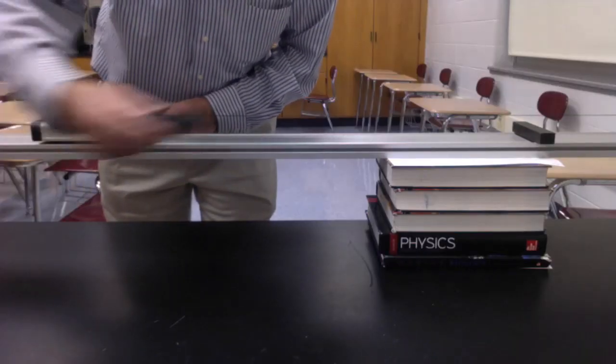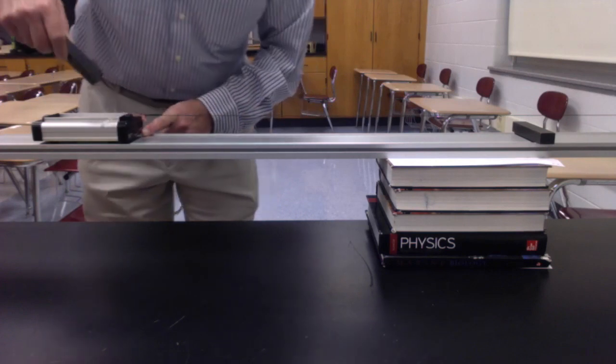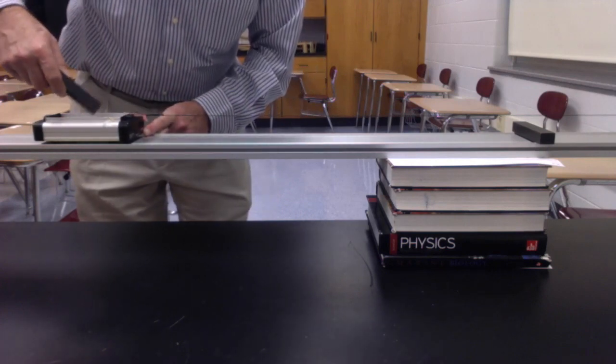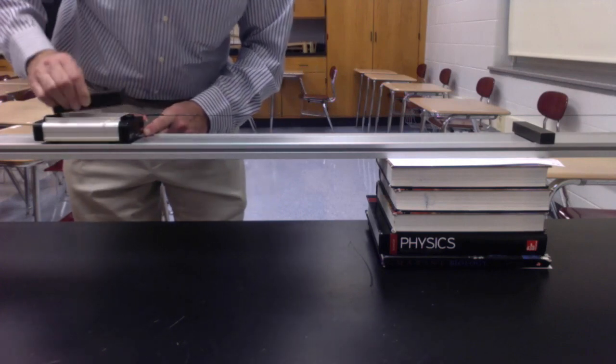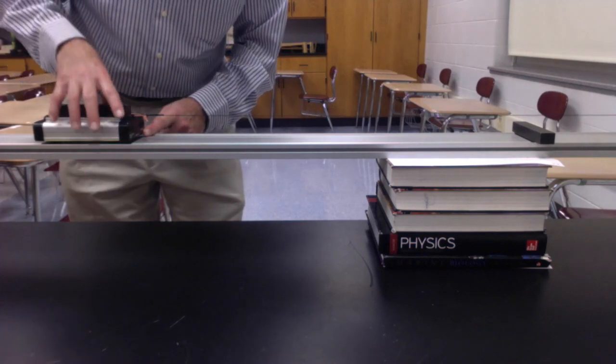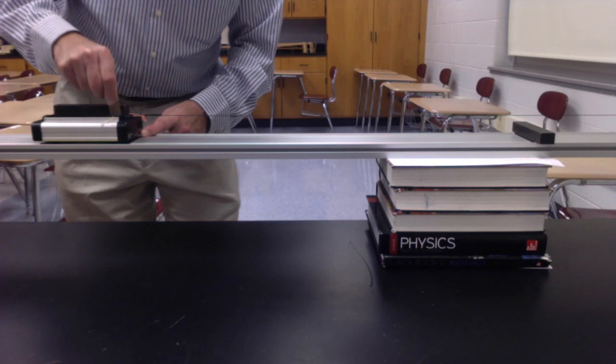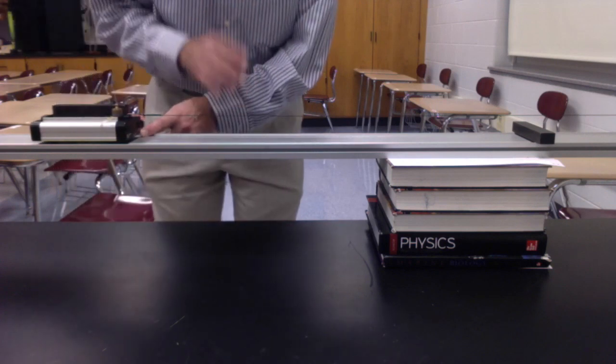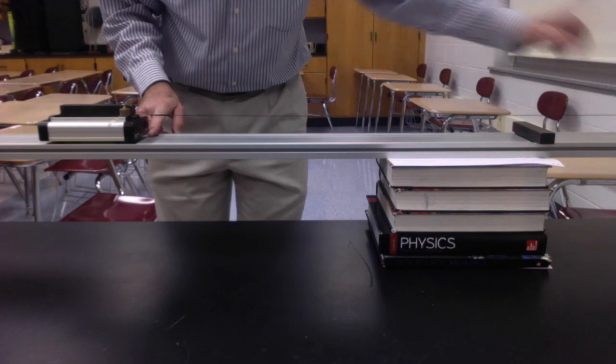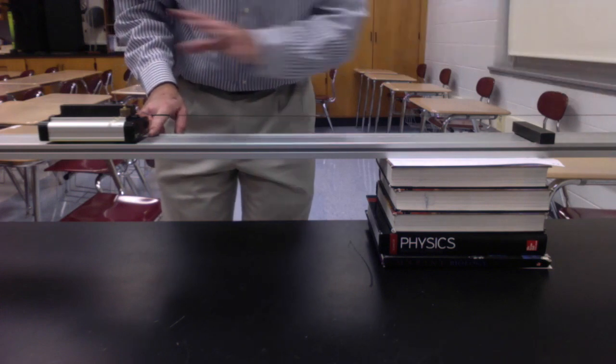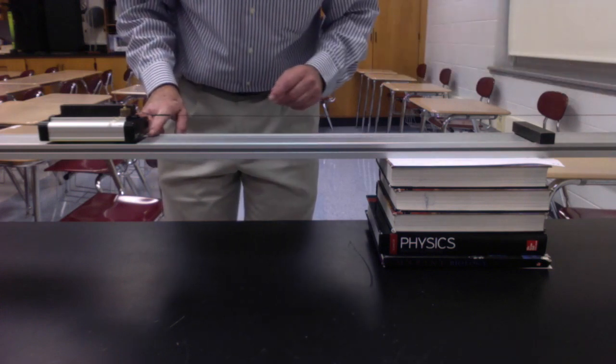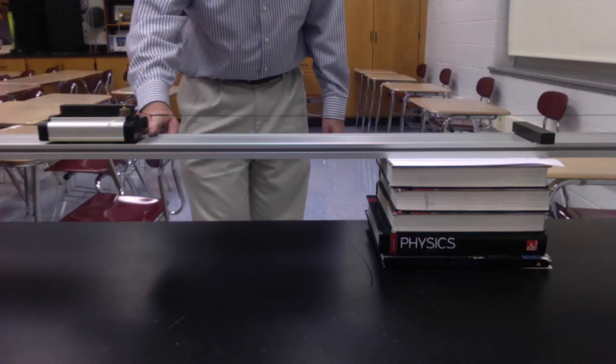Now we're going to keep the 50 grams out there, but we're going to make this mass bigger. I got another 500. I'm putting it in here. That's 1,000 grams plus 50, but I'm going to put another 50 in here. So we're now doubling the mass of the system. The mass hanging off the end stays the same, but the mass of the system is now doubled. Ready, set, go.